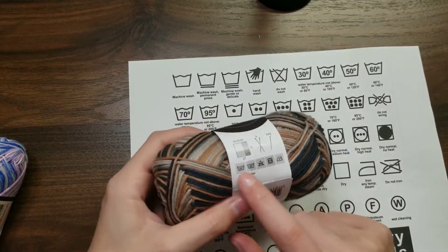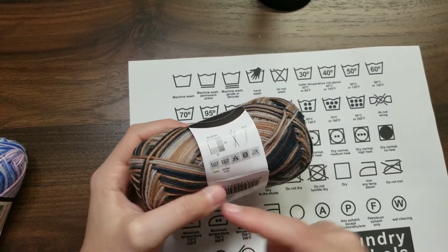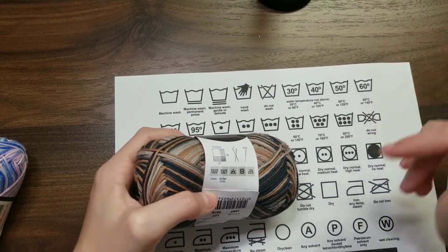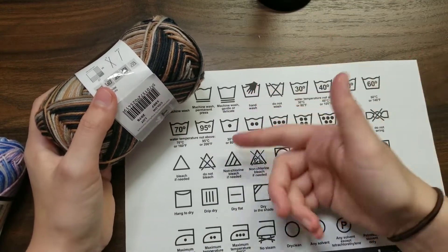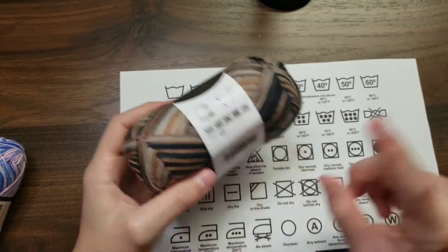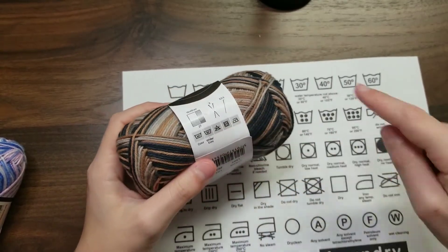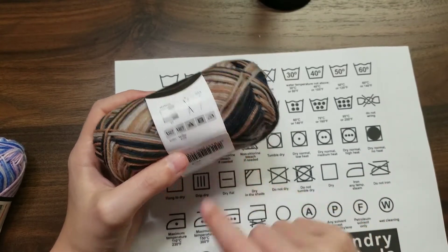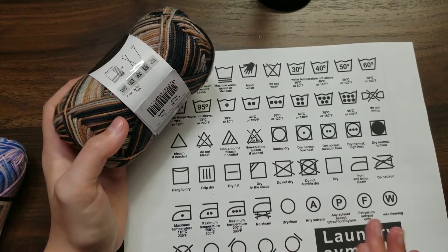So, for the first one, I don't know why they have two different ones. I'm not sure if any of you know why. But the first one is the symbol right here, which is water temperature not above 40 degrees Celsius or 105 degrees Fahrenheit. And then the next one is right here, which is water temperature not above 95 degrees Celsius or 200 degrees Fahrenheit. And then here we have the triangle crossed out, which means do not bleach. And then we have this one right here, which is do not tumble dry. And then we have maximum temperature for ironing is 110 degrees Celsius or 230 degrees Fahrenheit.